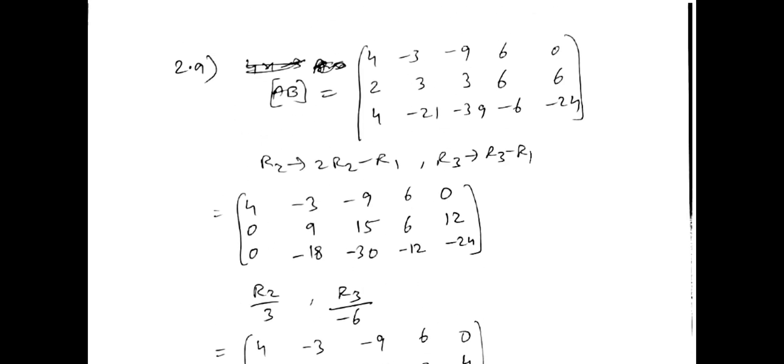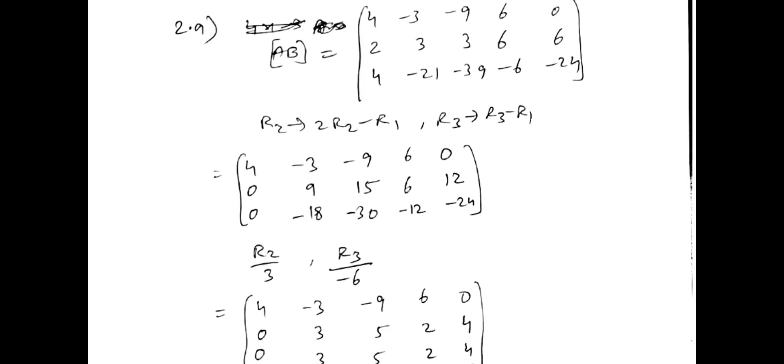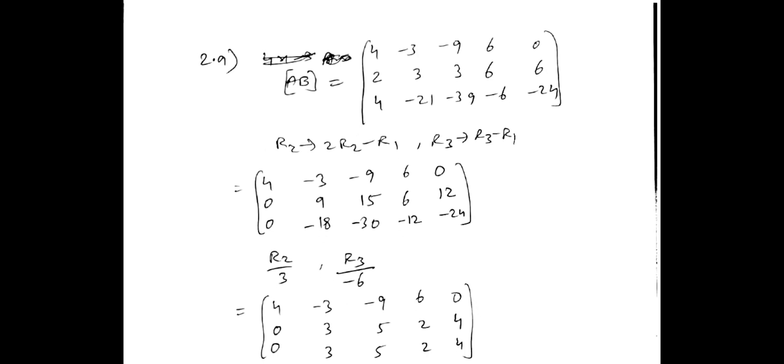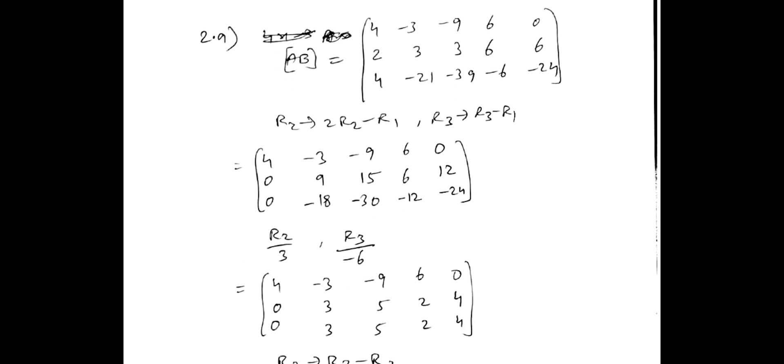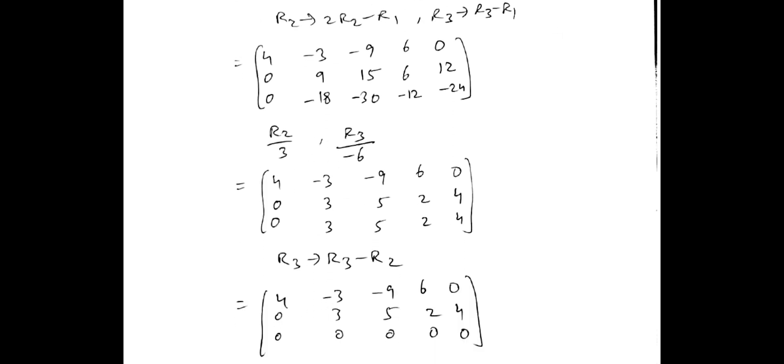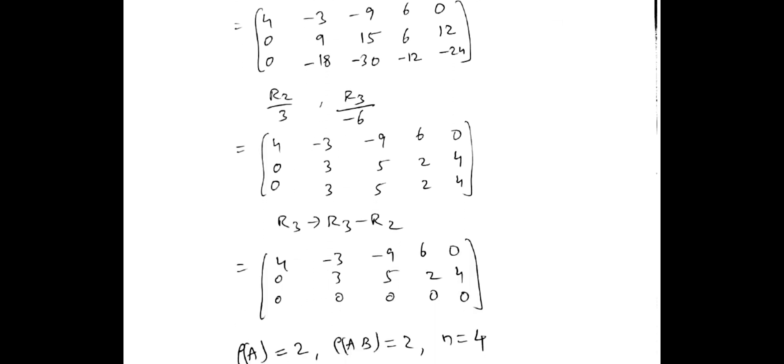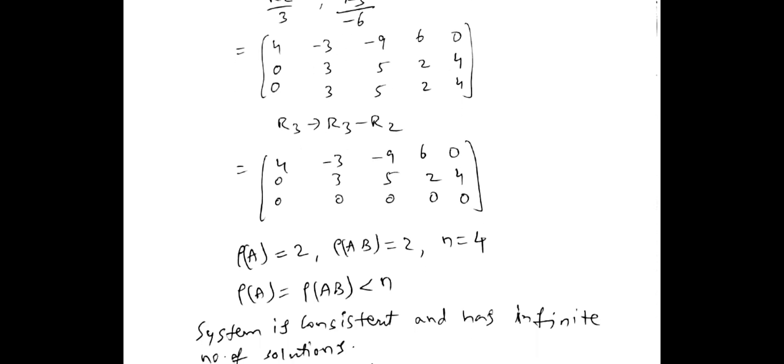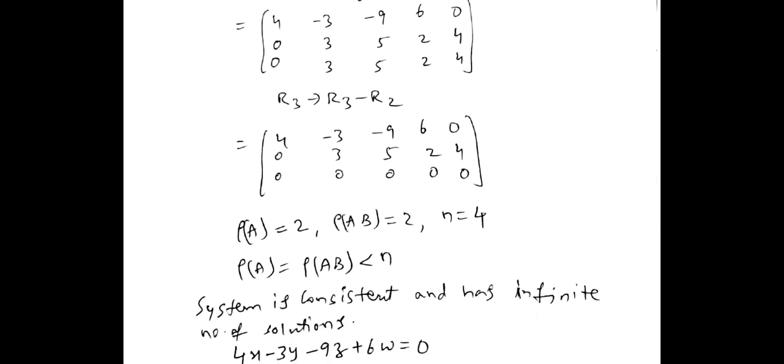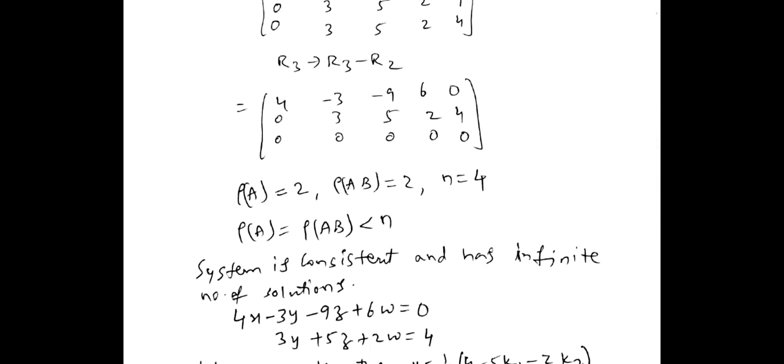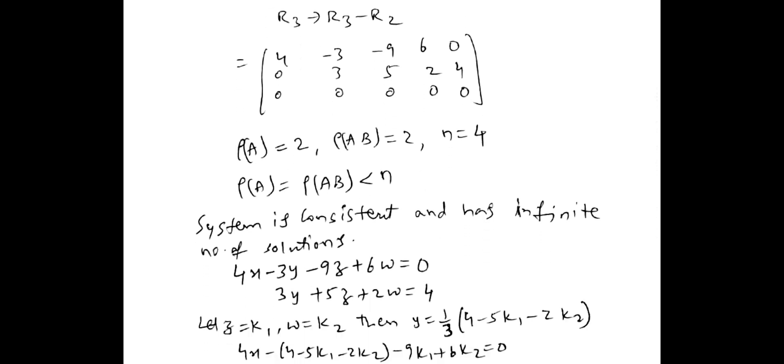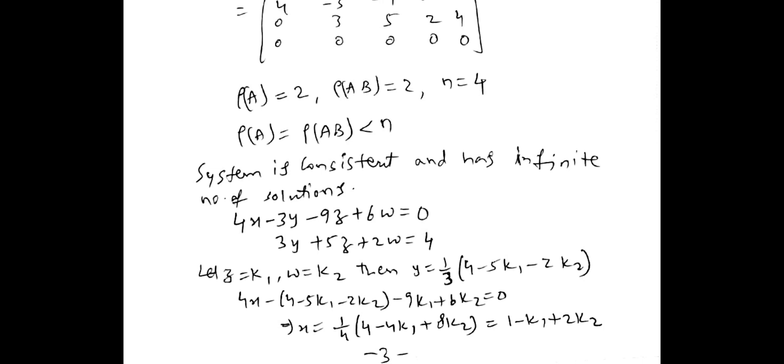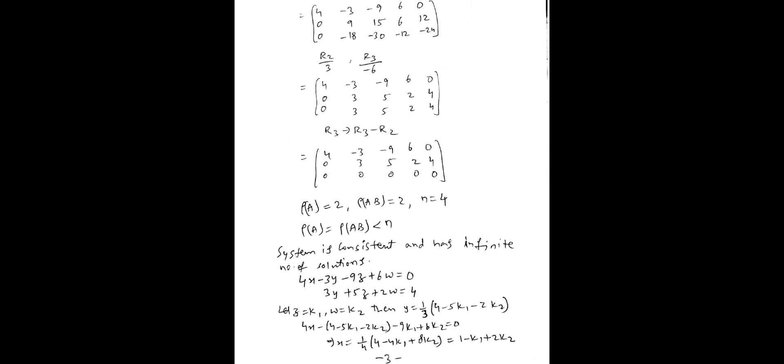Then long answer questions 2a. So here also you have to find the rank. So perform the operations, below the diagonal elements you have to make 0. 2r2 minus r1, and then r2. R3 is R3 minus r1. Then divide r2 by 3, R3 by minus 6. Then again r3 changes to r3 minus r2. So here rank is 2. Number of unknowns are 4. So rank of a is less than n. So 2 unknowns we have to take. So I took z is equal to k1 and w is equal to k2. So after that you simplify equations. You will get the equations.